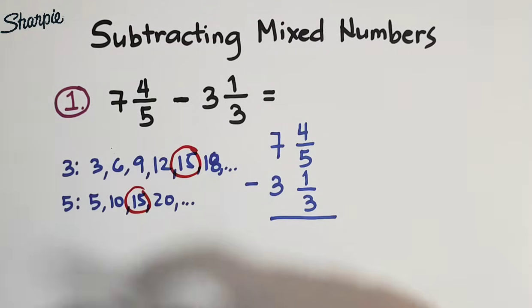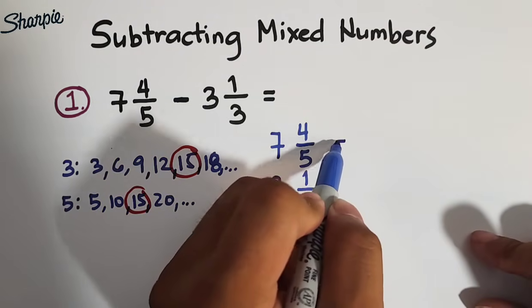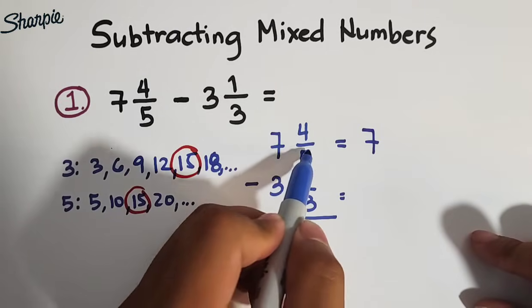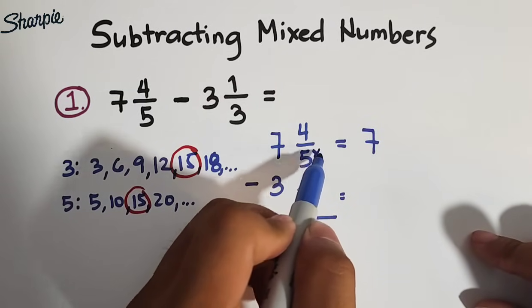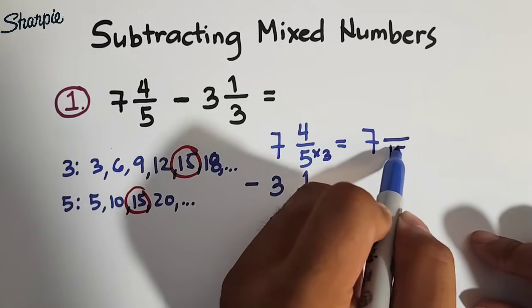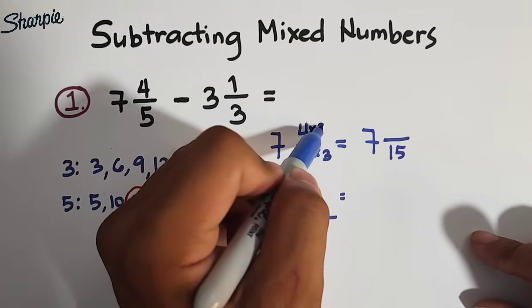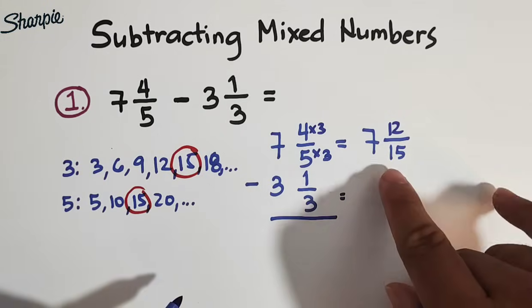So this will be the least common denominator of each denominator. So we will copy this. We have this one, 7, and then to make this 15, we will multiply 5 by 3. So we have now 15. And also, we need to multiply 4 by 3. So 4 times 3 is 12. So this is now the mixed number, 7 and 12 over 15.